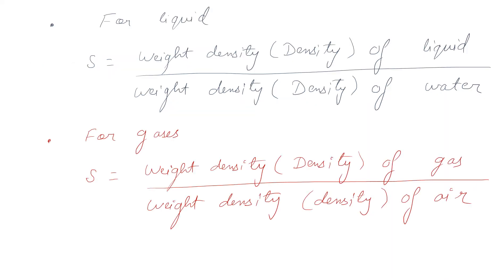For gases, specific gravity is defined as the ratio of weight density of the gas to weight density of air, or equivalently, the density of the gas divided by the density of air.